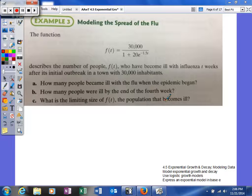This describes the number of people, f(t), who have become ill with influenza t weeks after its initial outbreak in a town of 30,000 inhabitants. How many people became ill with the flu when the epidemic first began? We're looking for the original amount, which we can find pretty easily when the flu first started.